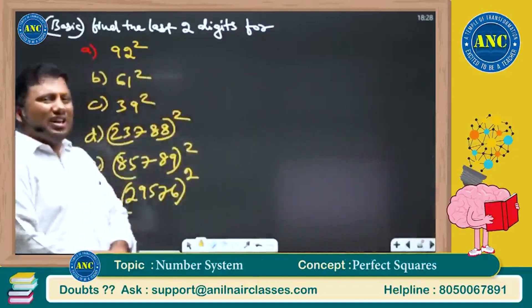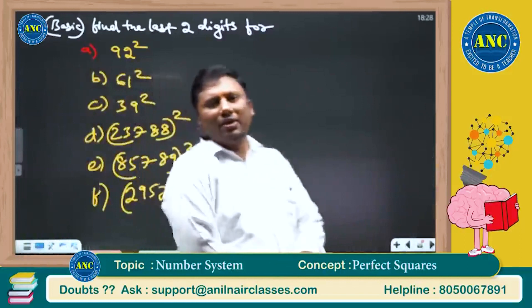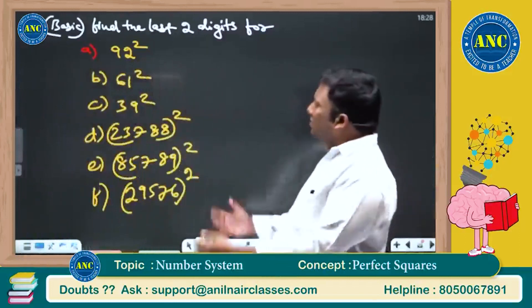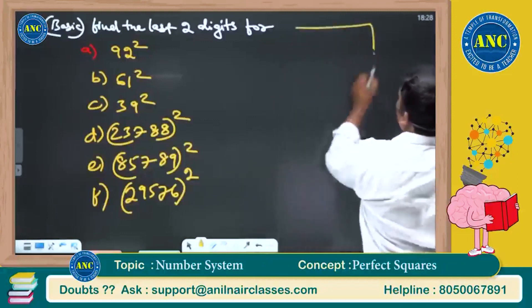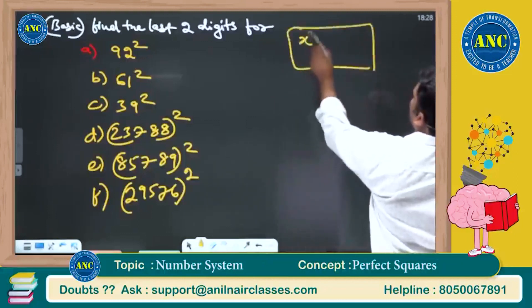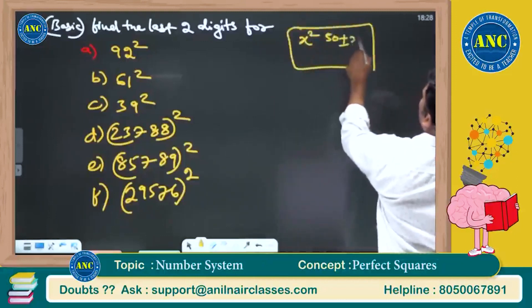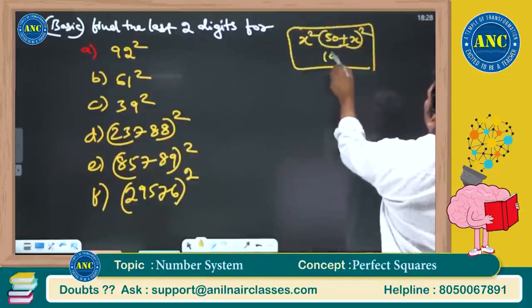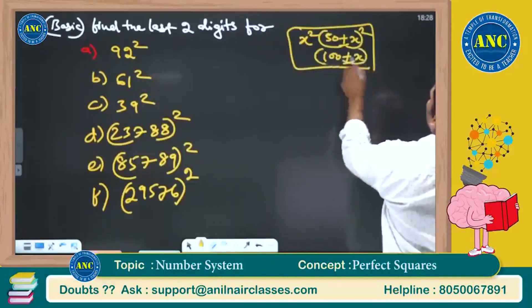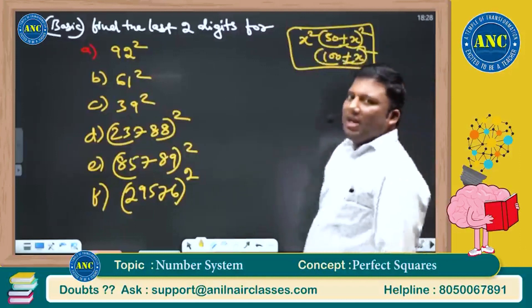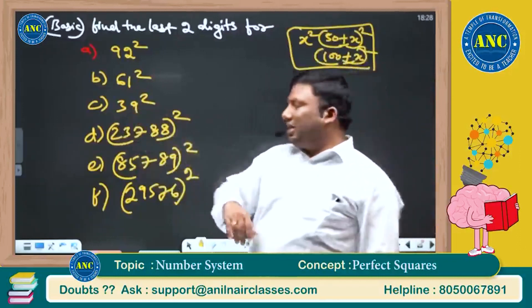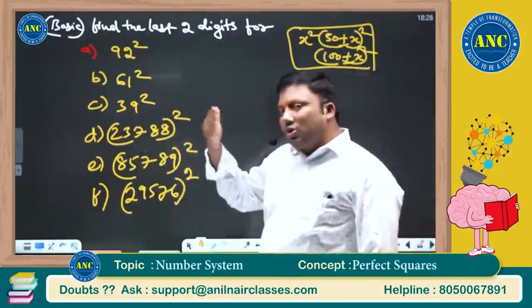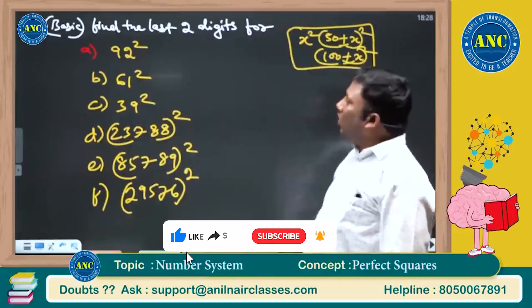92 square. These are all easy questions. Students who love solving mathematics based on numerical values, all these questions are easy. What is the concept? Concept is very simple: x square, 50 plus or minus x whole square, 100 plus or minus x whole square. Last two digits is same. If the number is closer to 50, check how much it is more, how much it is less. If a number is closer to 100, check how much it is more, how much it is less.